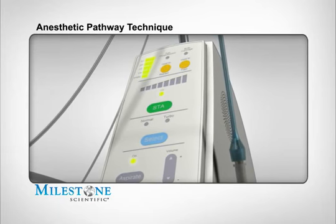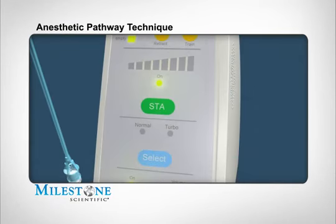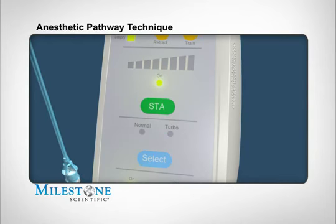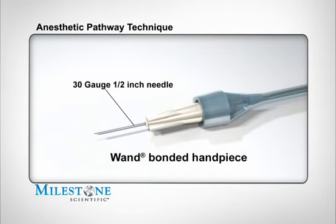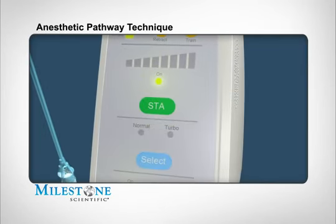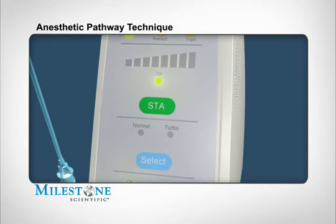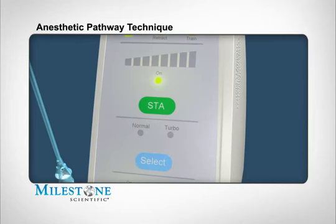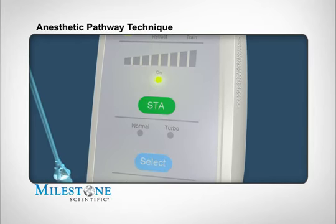Before you begin, verify the STA system is set to the STA mode. It's recommended that you use the 30-gauge, half-inch bonded STA wand handpiece when performing the Pre-Puncture Technique in the palate. It's critical to use the STA mode to ensure that a safe and controlled single flow rate is maintained throughout this injection. Delivering the anesthetic at a faster rate than the control flow rate can result in adverse tissue reactions and or tissue damage.